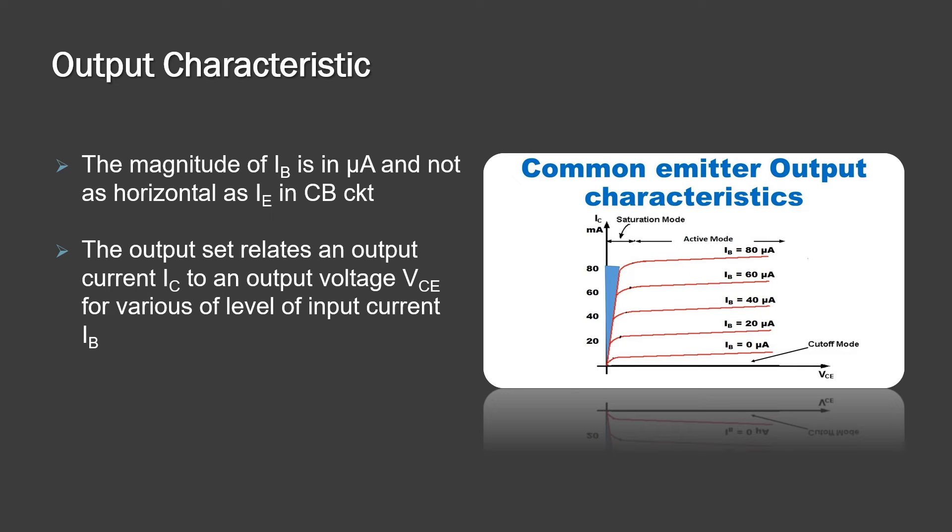This shows the output characteristics of common emitter configuration. There are three types of modes represented in the output characteristics. The magnitude of base current IEB is in microampere and not as horizontal as IE emitter current in the common base circuit.